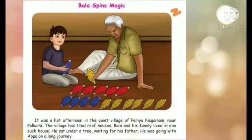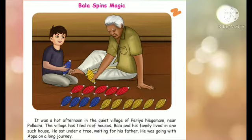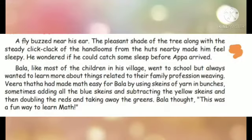Let us see the lessons. Long journey means a travel that takes up a long time. A fly buzzed near his ear — fly buzzed means made a humming sound. The pleasant — pleasant means sweet or agreeable. Side of the tree along with the steady click-clack of the hand looms. Hand loom means a weaving machine worked by the hand, from the hearth nearby, made him feel sleepy.